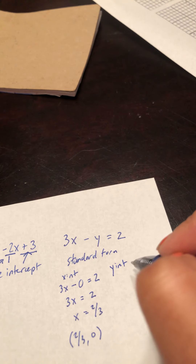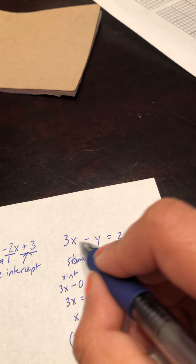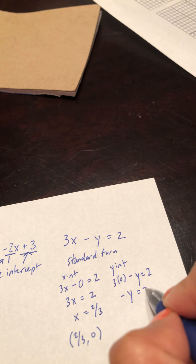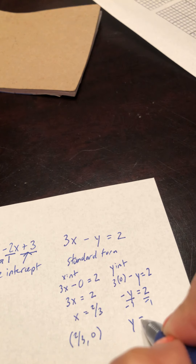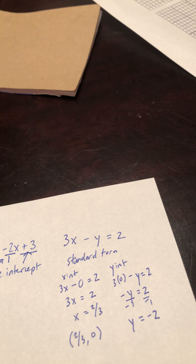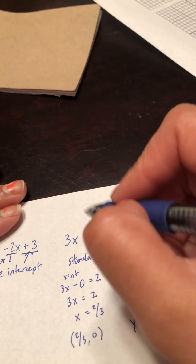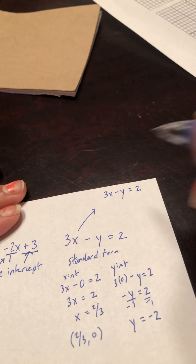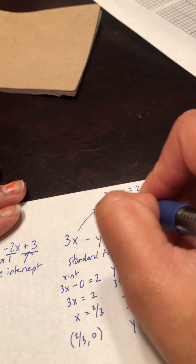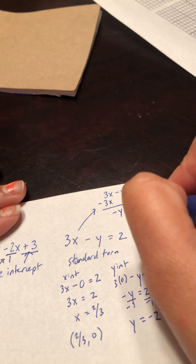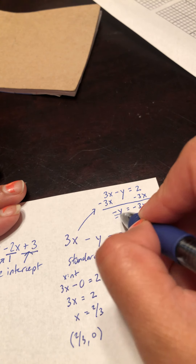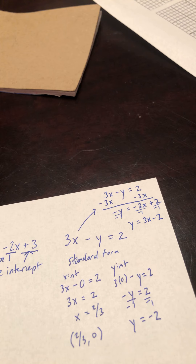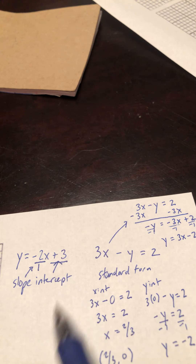For the y-intercept, make the x-value equal to zero. Writing the entire equation with x equal to zero, I get negative y equals two. Dividing both sides by negative one, y equals negative two. If standard form isn't your preferred approach, you can rewrite the equation in slope-intercept form by subtracting 3x from both sides, giving negative 3x plus two, then dividing everything by negative one to get y equals positive 3x minus two.